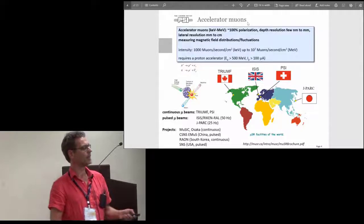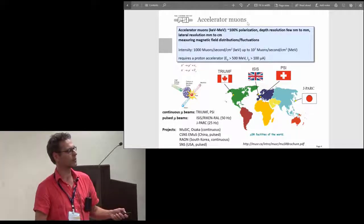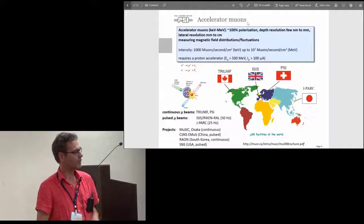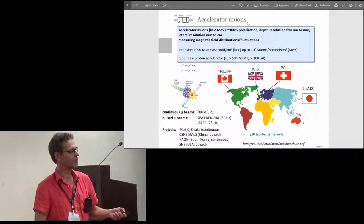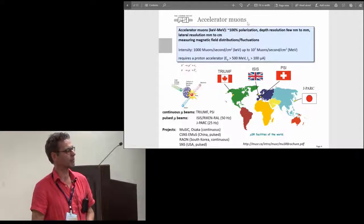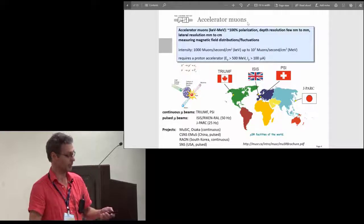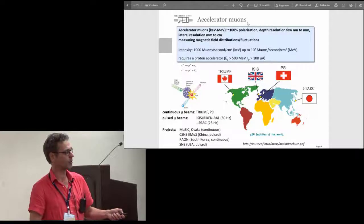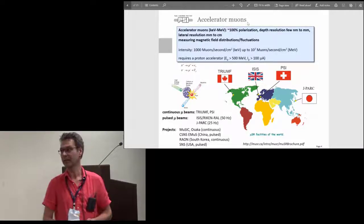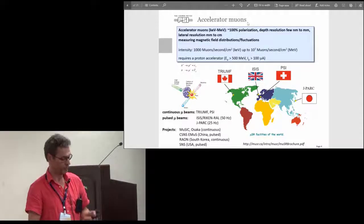The good news for muon science is there are now two projects more or less approved. There's the MUSIC project which provides a second muon facility in Japan in Osaka with the DC muon beam, and just four weeks ago the muon project at the CSNS in China got its first muon facility approved. There are more projects in South Korea and in the United States at the SNS, but there it's less clear if there will be muon beams in the future.